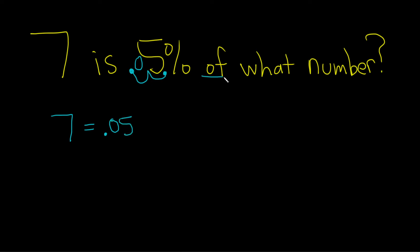The word of means multiply, so times. I use a dot for multiplication sometimes. You can use an x if you want. And what number is what we're looking for, so I'll call that lowercase n.